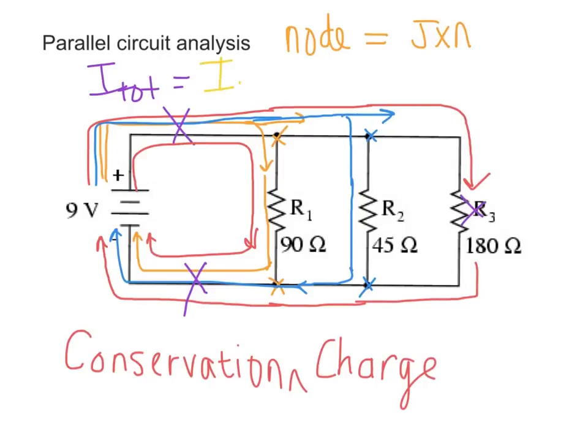So the total current here is going to be equal to the gold current, which we'll call I1 because it's going through R1, plus the blue current, which we're going to call I2 because it's going through resistor 2, plus the red current, which is I3 because it's going through resistor 3.